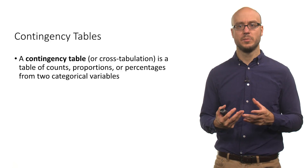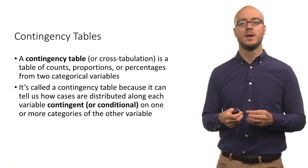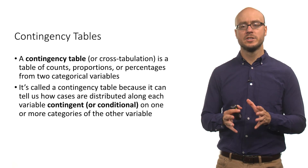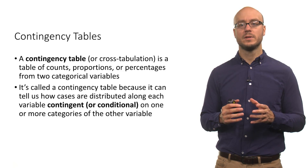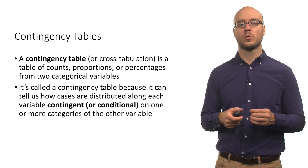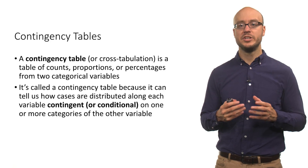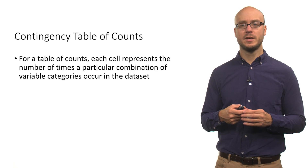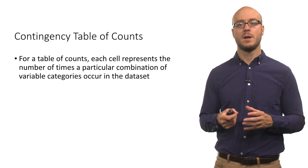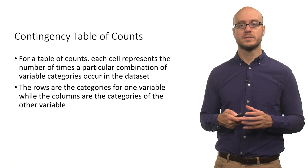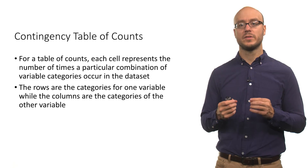A contingency table is also called a cross tabulation. It's simply a table of counts, proportions, or percentages from two categorical variables. The reason it's called a contingency table is that it tells us how the cases are distributed along each variable, contingent or conditional on one or more categories of the other variable. The rows of a contingency table represent the categories for one variable, and the columns are the categories of the other variable.